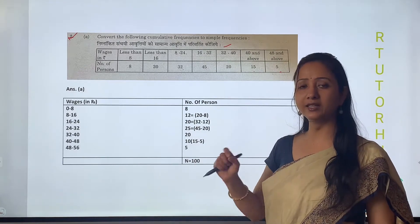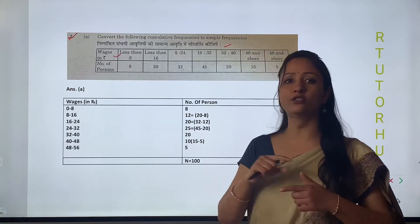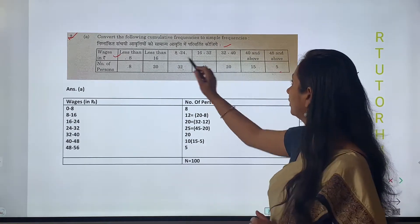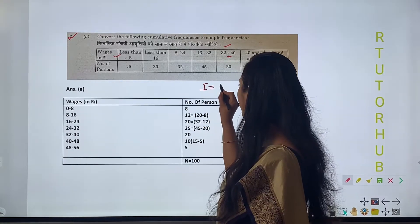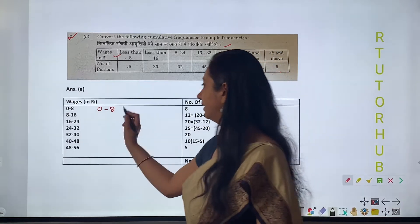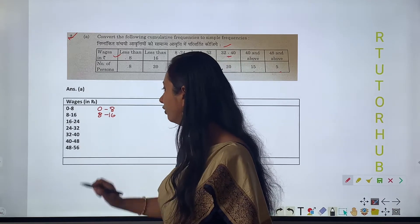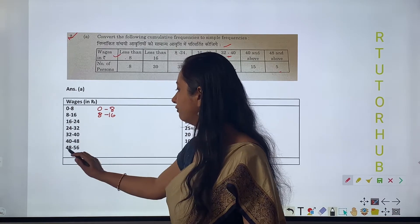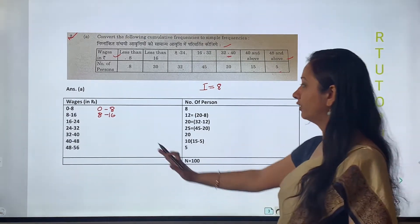From the cumulative frequency we will find out the simple frequency. First of all we need to form class groups. The first group is less than 8. Looking further, the class interval is 8, so I equals to 8. So 0 to 8 becomes our first class group. Then 8 to 16, next is 16 to 24, then 24 to 32, then 32 to 40, 40 to 48, and 48 to 56, because the last given value is 48 and above.